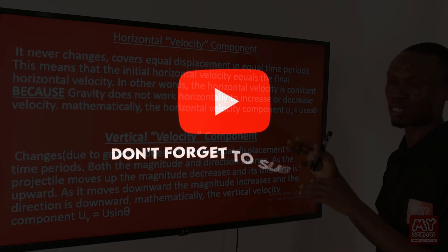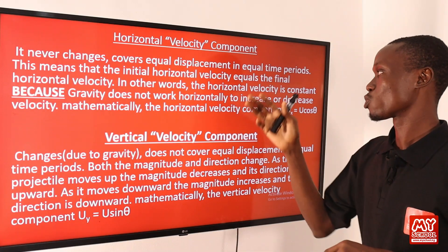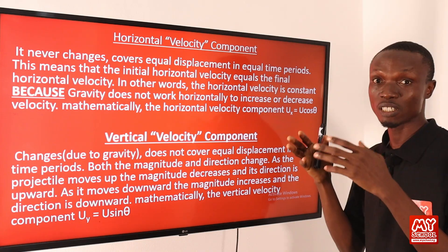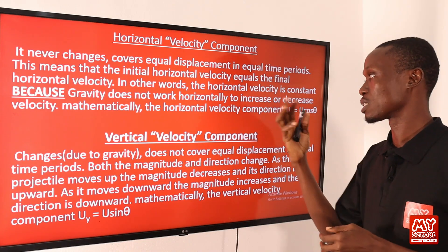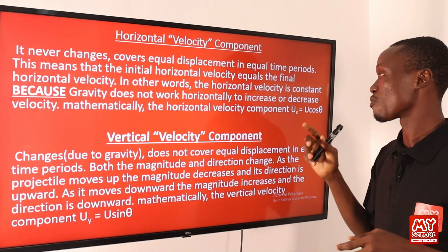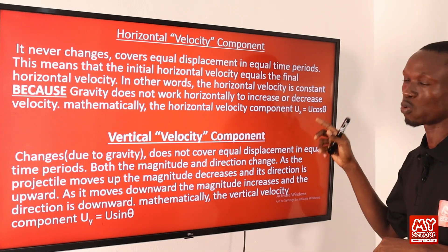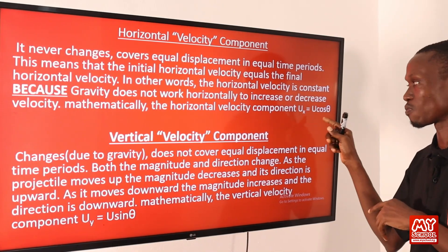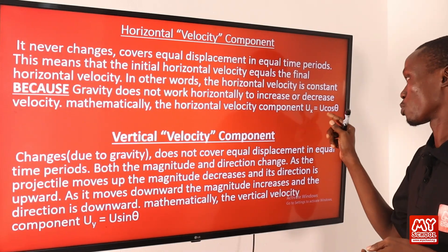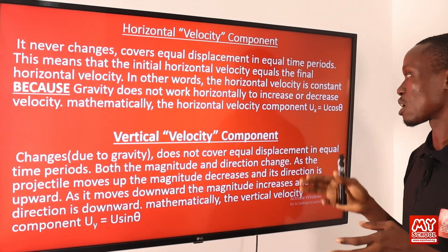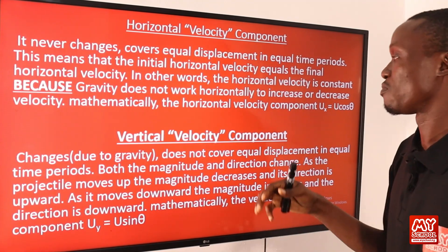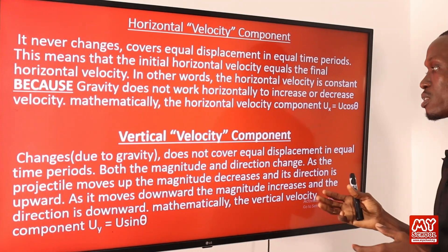Mathematically, just as with vectors, we can resolve the velocity into horizontal and vertical components. Resolving the horizontal component gives us: u_x = u cos θ. Take note of this, because we are going to use it when deriving some equations.